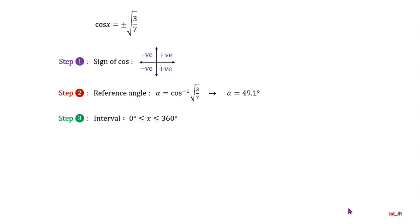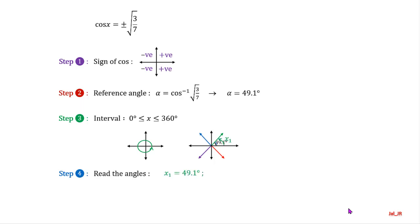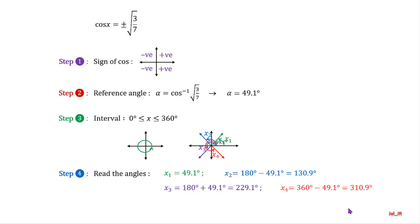Third step: the interval of solution is from 0 to 360 degrees. We will read the angle counterclockwise, one complete round. The first solution is 49.1 degrees. The second solution is 180 minus 49.1, equals 130.9 degrees. The third solution is 180 plus 49.1, equals 229.1 degrees. The last solution is 360 minus 49.1, equals 310.9 degrees.